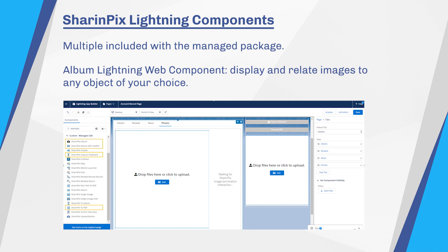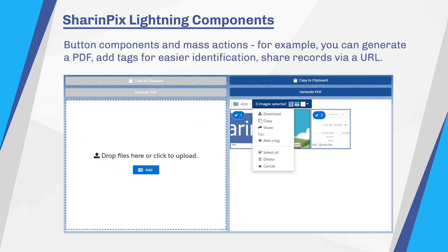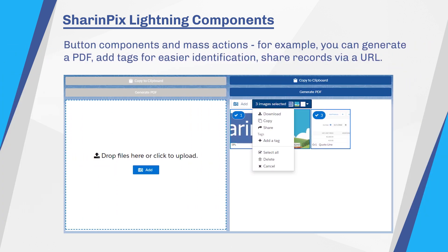It aims to reduce the time spent uploading and accessing picture details. After uploading pictures and selecting one or more of them, button components' mass actions become available. For example, you can generate a PDF, add tags for easier identification, or share records as a public URL.